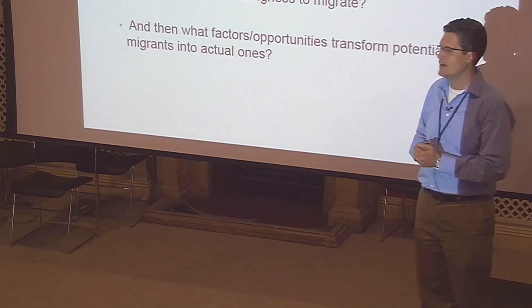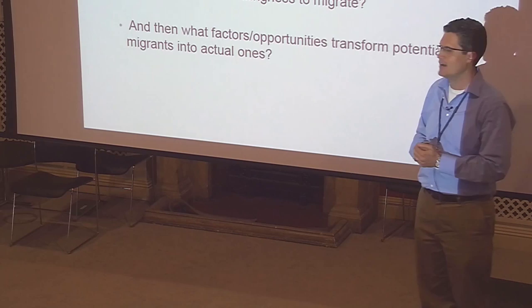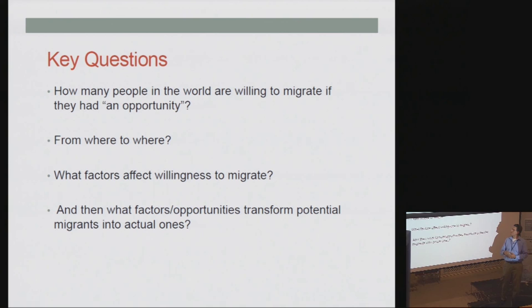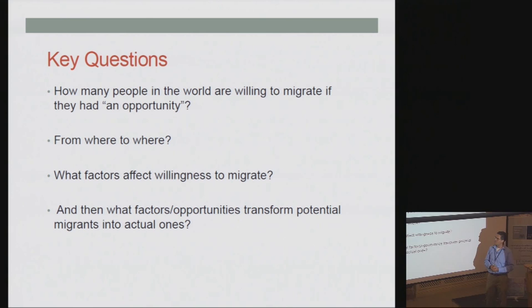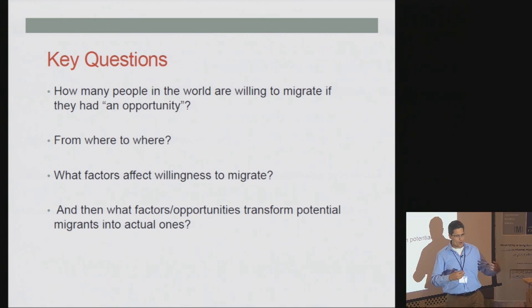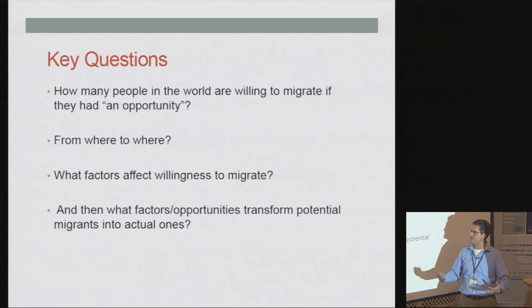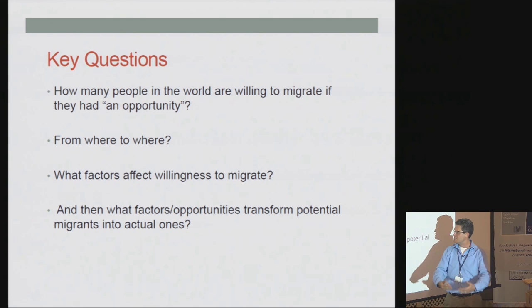The questions this paper starts with are quite deep and important. A lot of economists and policymakers would like to understand: how many people migrate across countries, and how many people would migrate if they had an opportunity? Relative to the actual flow, how big is the potential flow, and from where to where would they go? What factors affect migration willingness and potential migration, and how do potential migrants translate into actual migrants?